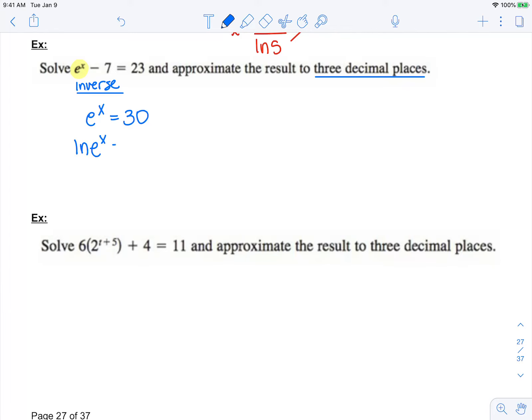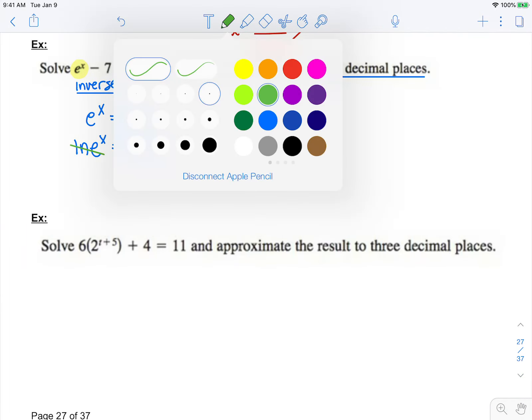ln of e to the x equals ln of 30. Because ln of e cancels,